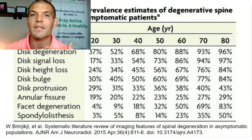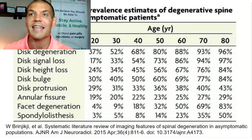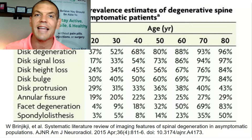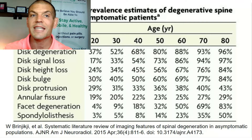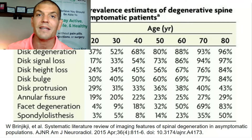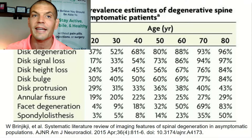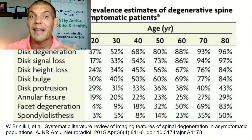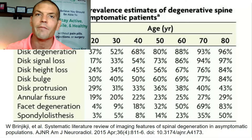Spondylolisthesis — a forward slipping — becomes somewhat common in the 60s, 70s, and 80s, again in people without pain. So the take-home point is: if you have some of these findings on your MRI, don't get worried because they're big, scary-sounding words. A lot of normal people without pain have them, which means if you have them and happen to have pain, you can get back to a state where you still have them but don't have pain.